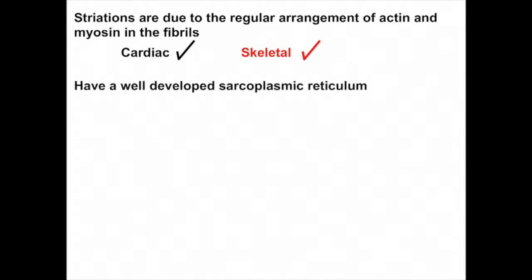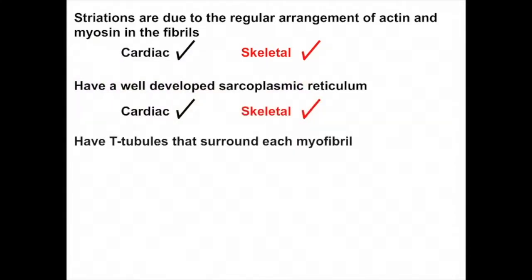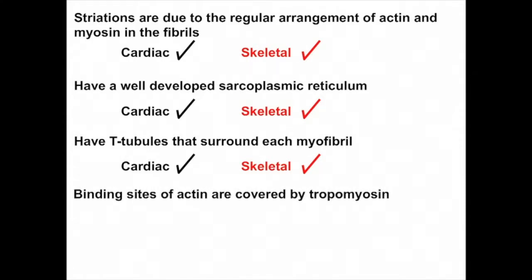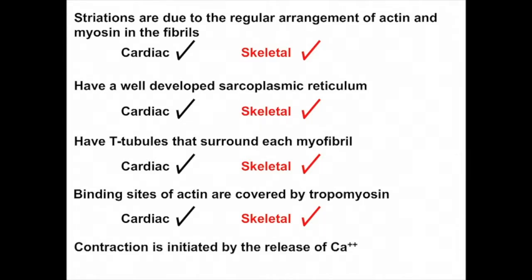They have a well-developed sarcoplasmic reticulum, which is also true of cardiac and skeletal muscle. They have T-tubules that surround each myofibril, also true of cardiac and skeletal muscle. The binding sites of actin are covered by tropomyosin, true in cardiac and true in skeletal muscle. And finally, contraction is initiated by the release of calcium, which is true in both types of muscle as well.